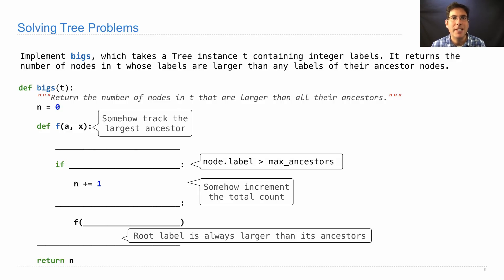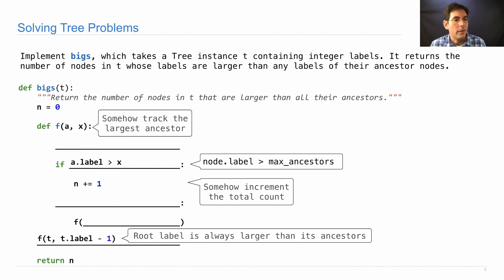Now we can start filling in some code. `a.label > x` is the right way of expressing what I wanted to express about nodes and their ancestors, given the template that I have available. And again, one way to get the recursion started is to call f on t with some value that happens to be less than t's label.